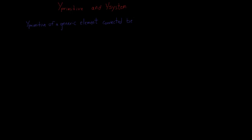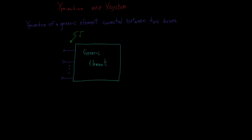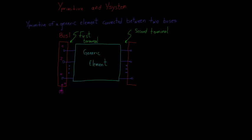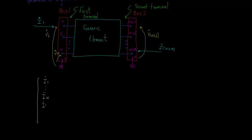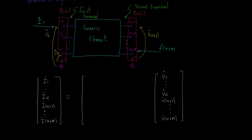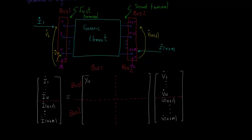First, let's define the Y primitive for a single element. An element has terminals. When you create an element in OpenDSS, you must define the name of the buses which each terminal is connected to. A terminal has conductors, and the point of connection between each conductor and a bus is called a node. Let's label the nodal voltages as V1 to Vn at the first terminal, and Vn+1 to Vn+m at the second terminal. The injected current follows the same pattern. They are related to the nodal voltages through the Y primitive. The Y primitive dimension is the number of nodes by the number of nodes. One important feature of the Y primitive is that it is always a symmetrical matrix — in other words, the element Yij is equal to the element Yji.